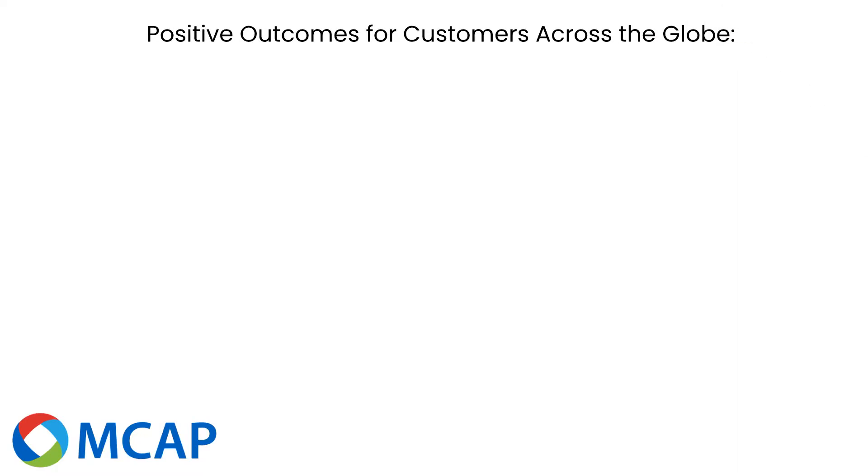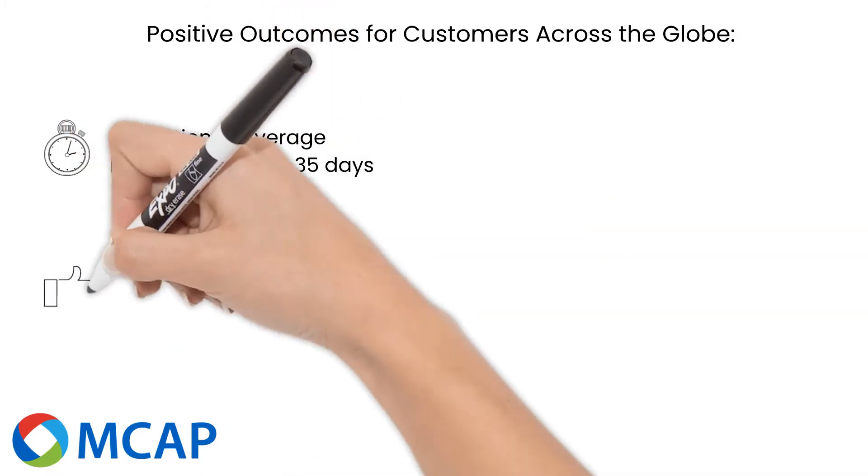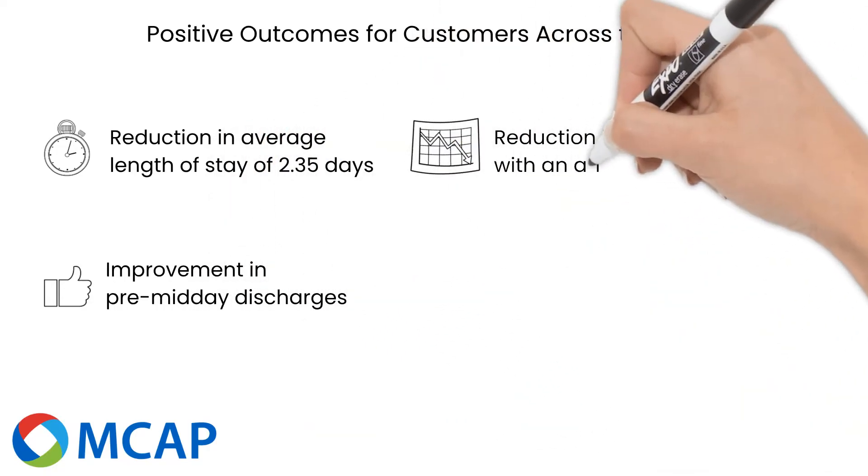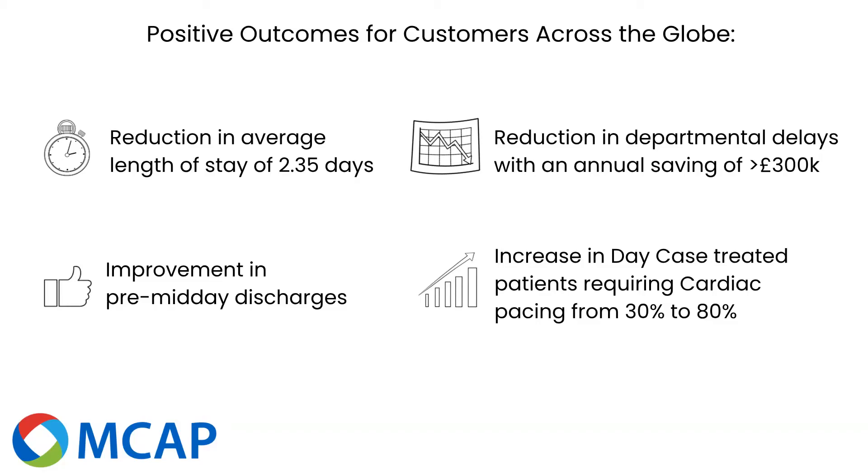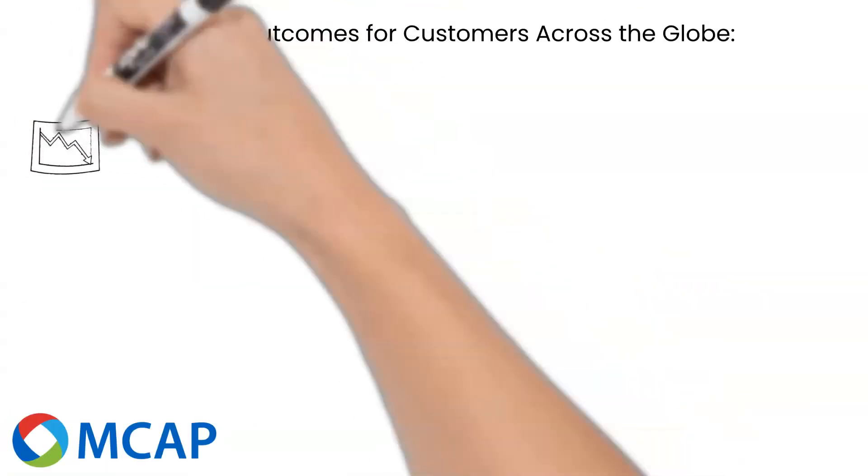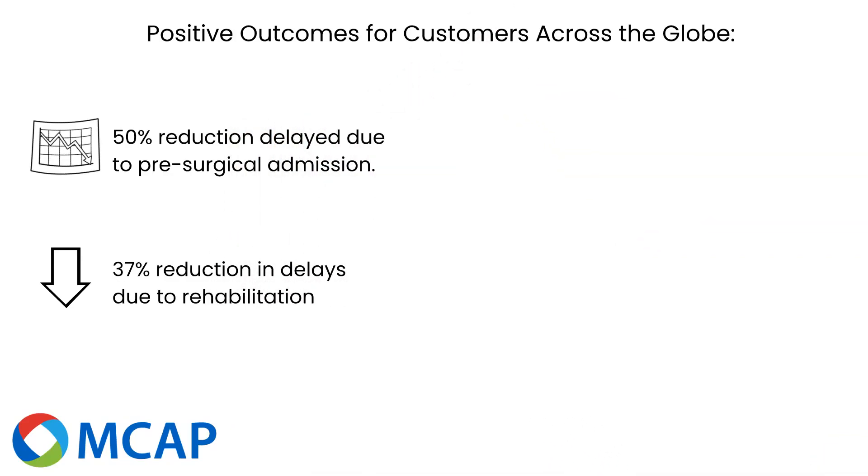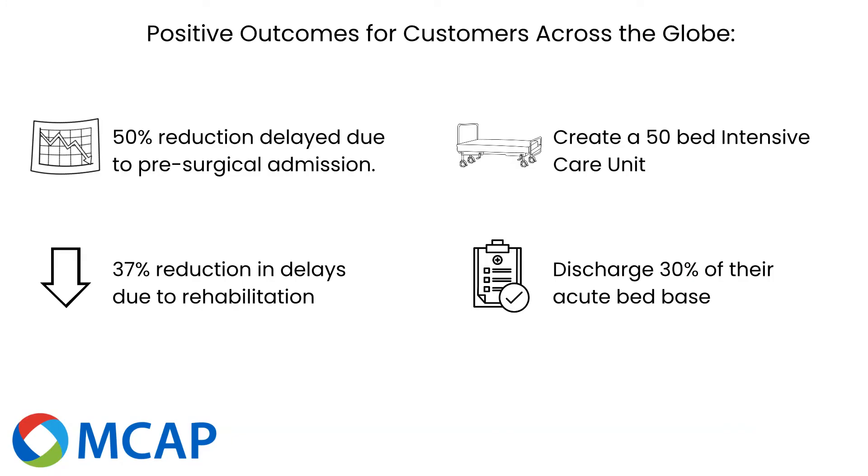MCAP has supported many positive outcomes for its customers across the globe, including a reduction in length of stay in targeted wards of 2.35 days over six months, improvement in number of patients discharged before midday, radiology process redesign resulting in reduction in delays and an annual saving of greater than £300,000 per annum, increase in patients requiring insertion being treated as day cases from 30% to 80%, a 50% reduction in patients delayed due to pre-surgical admission, a reduction in patients delayed due to awaiting rehabilitation by 37%, and in response to the COVID-19 pandemic, MCAP has been used by a 250-bed specialist respiratory hospital to free capacity and create a 50-bed ICU, and a 900-bed integrated care system to discharge 30% of their acute bed base.